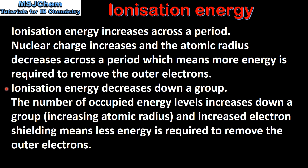Ionization energy decreases down a group. The number of occupied energy levels increases down a group, which means increasing atomic radius. This, together with increased electron shielding, means less energy is required to remove the outer electrons and the ionization energy decreases.